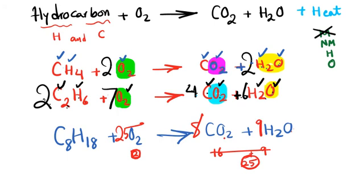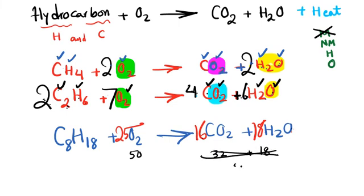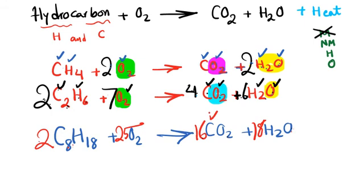Switch the numbers: write twenty-five for O2 and two for each product coefficient. Double check oxygen: twenty-five times two equals fifty; sixteen times two equals thirty-two plus eighteen equals fifty ✓. Check carbon: two times eight equals sixteen ✓. Check hydrogen: two times eighteen equals thirty-six, eighteen times two equals thirty-six ✓. Balanced.